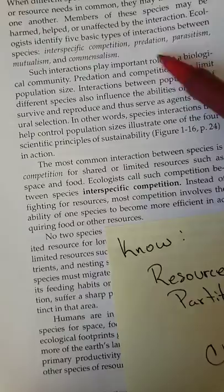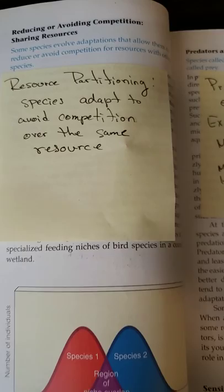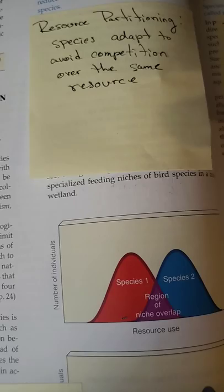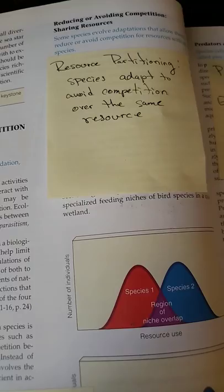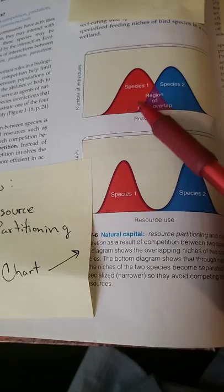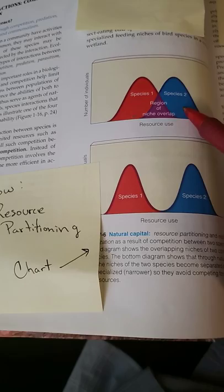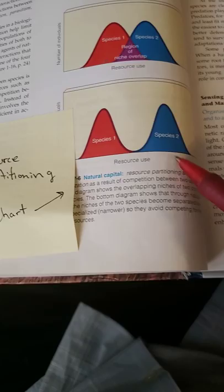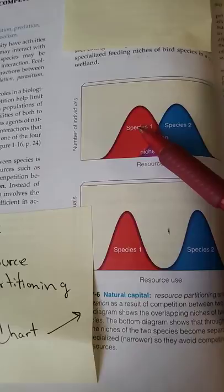Resource partitioning is when species adapt to avoid competition over the same resource. Many animals try not to overlap — they don't hunt in the same area to avoid conflict, or they look for a different type of food source. Look at these two graphs: species one and species two are shown by number of individuals versus the niche they overlap. A niche is just the area they occupy. To avoid conflict, species tend to move over or become more specific in using another resource.